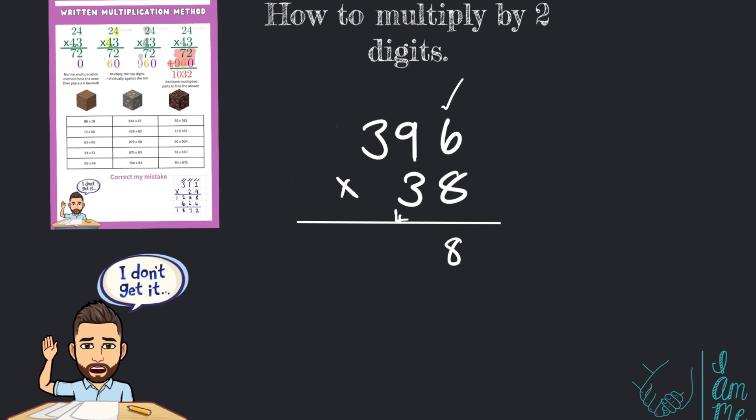Then 9 times 8, 72. Add the 4 that I carried, 76. 6 down. Carry the 7 across. Remember to tick the 9. And finally 8 times 3, 24. Add the 7, 31. I don't need to carry the 3 here because there's nothing in that column.